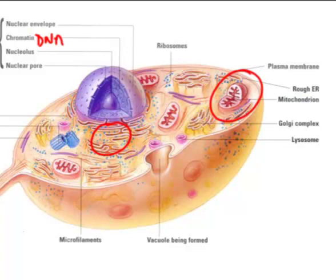Something else you'll see in animal cells that plants don't have: they have lysosomes. These contain digestive enzymes that the animal cell will use to break down or digest anything it's trying to eat or digest. They can also be used to break down the cell after its life is over.